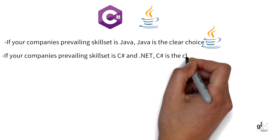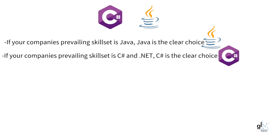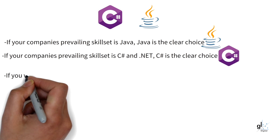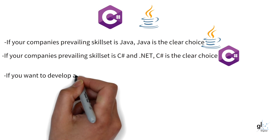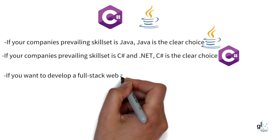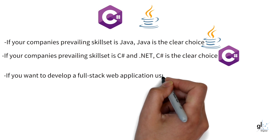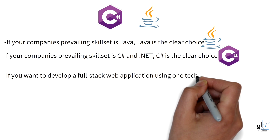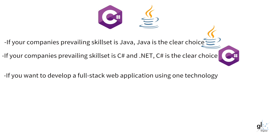If you want to develop an enterprise full-stack web application, note that with C-Sharp and .NET you can use one technology for both front-end and back-end development. This is because you can now use the Blazor framework to develop the front-end for your applications, which can be written in C-Sharp. So with C-Sharp and .NET, you can leverage the benefit of using one technology for the entire full-stack application.